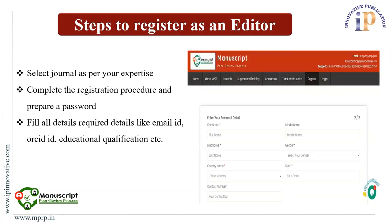It will look like this as you can see in the picture. First, you can select the journal as per your expertise, complete the registration procedure, and prepare a password. Fill all the required details like email ID, ORCID ID, educational qualifications, etc.